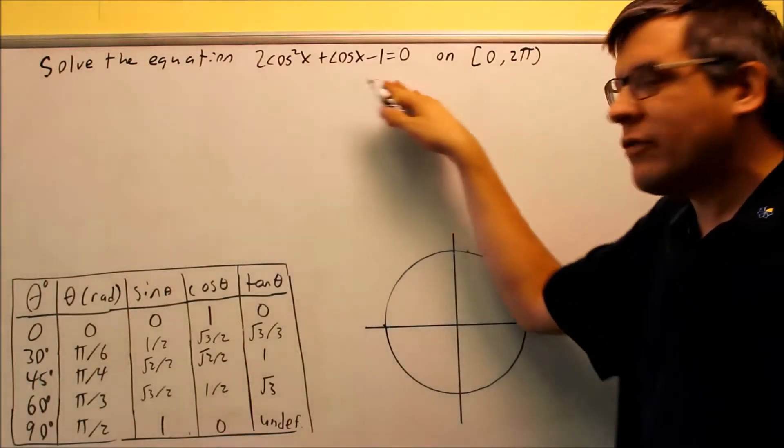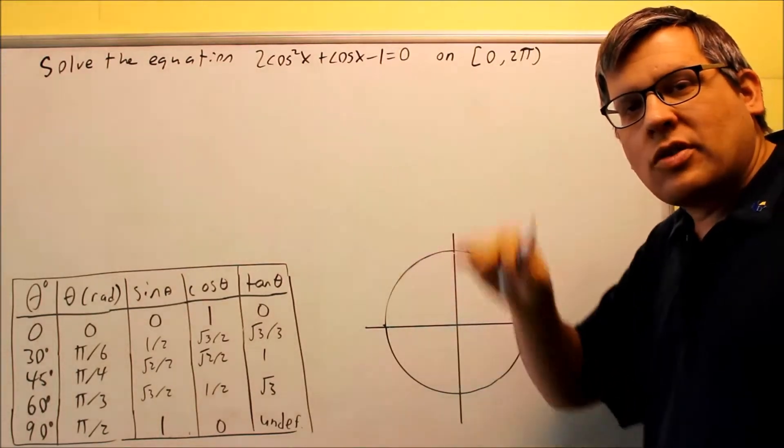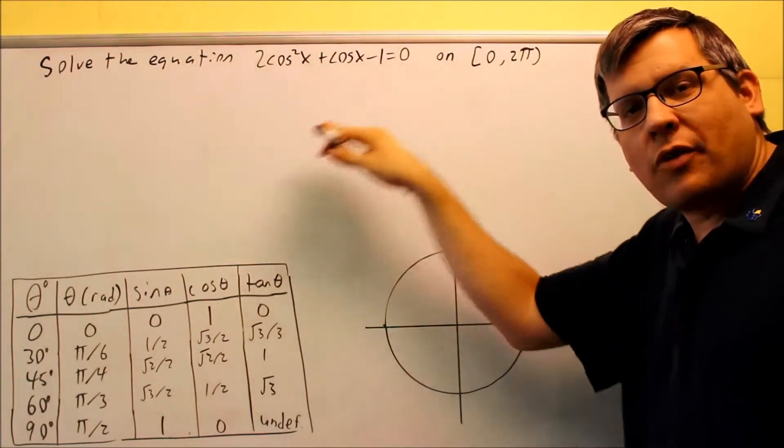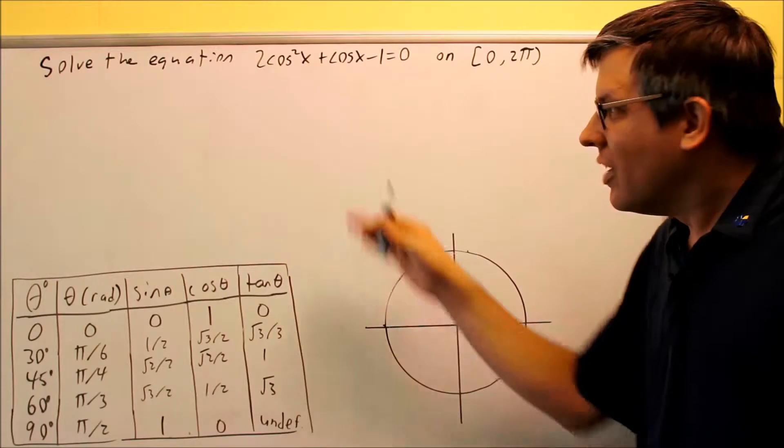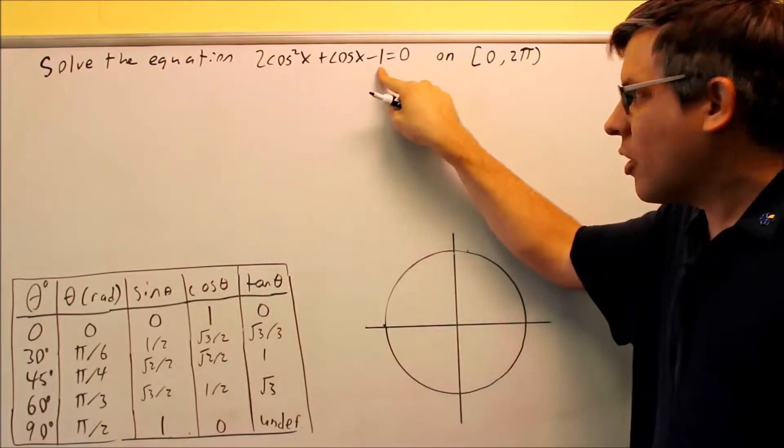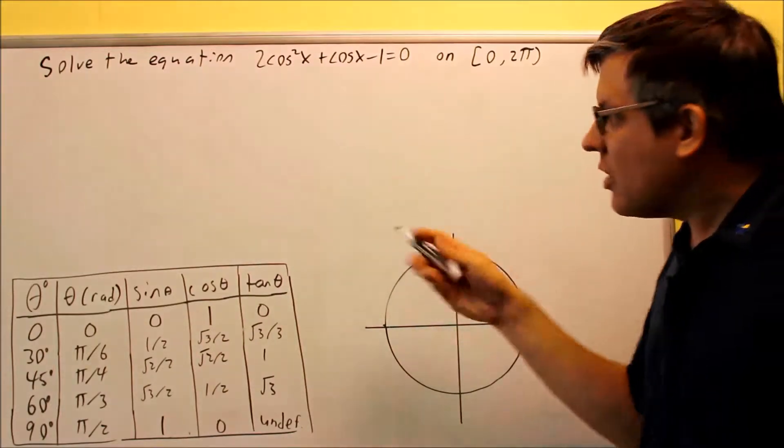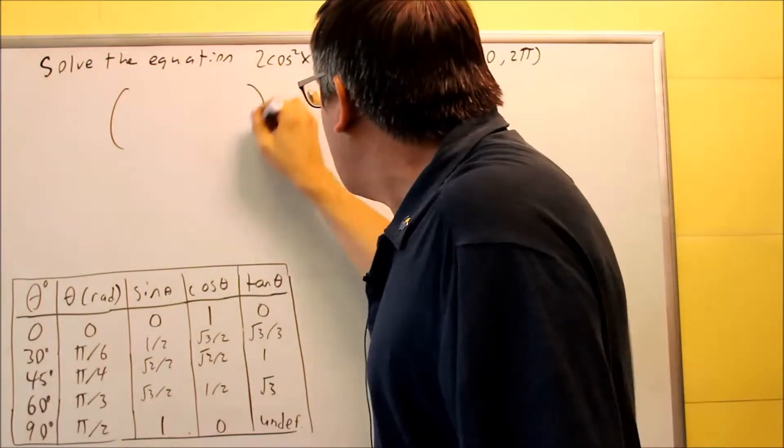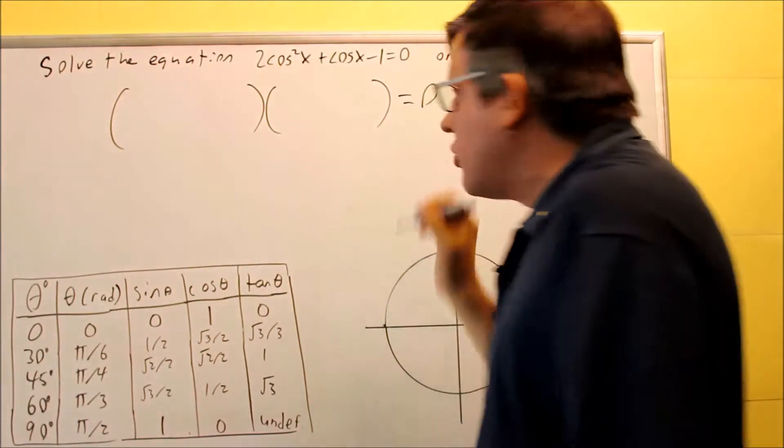Okay, for this problem, it's another one we have to do factoring, but what makes this different about the previous problem is now we have three terms instead of two. So this is not going to be one where you want to just pull something out because you're not going to be able to pull any cosine out of the one here. So that means that we have to do factoring like this, where we actually have two sets of parentheses.